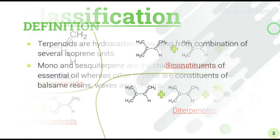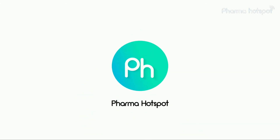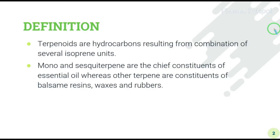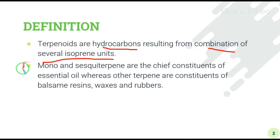Terpenoids are hydrocarbons which are made from the combination of several isoprene units. We will see the isoprene structure later on. Mono and sesquiterpenes are the chief constituents of essential oils.